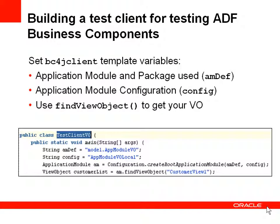The BC4J test client includes a couple of variables: one for the application module and package, another one for the module configuration, and a third one to determine which view object to use.